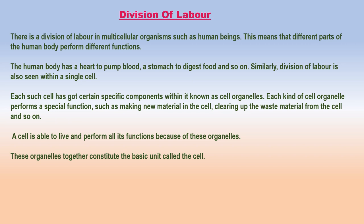An organism such as a human being can have cells of different kinds, e.g. sperm, leukocyte (white blood cell), osteocyte (bone cell), muscle cell, nerve cell, fat cell, etc. This is due to the division of labor within multicellular organisms. Different parts of the human body perform different functions — the heart pumps blood, the stomach digests food, and skeletal muscles perform movement and locomotion.